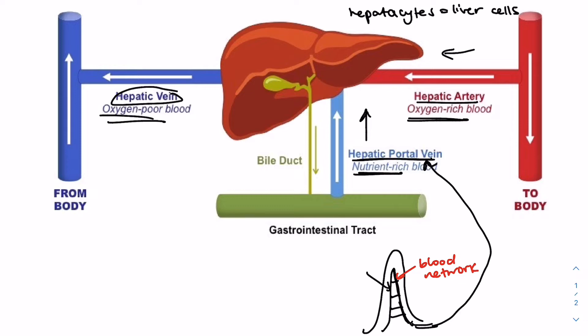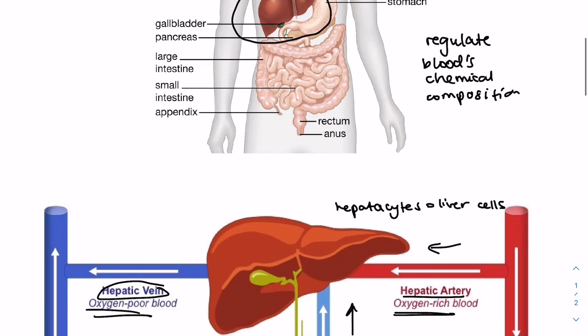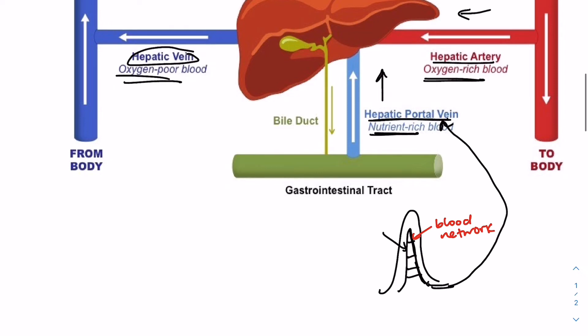So the liver has four main functions. As I mentioned, the overall role is to regulate blood chemical composition, but it does this in many different ways. So firstly, it's responsible for the storage and controlled release of key nutrients. So for example, that includes glycogen for blood glucose concentration, cholesterol, triglycerides, etc.